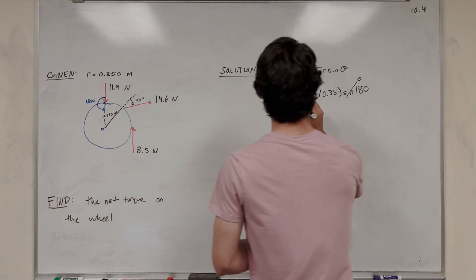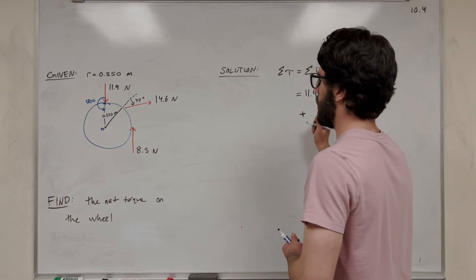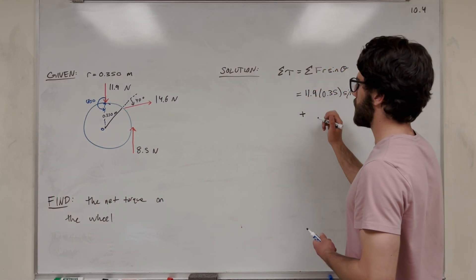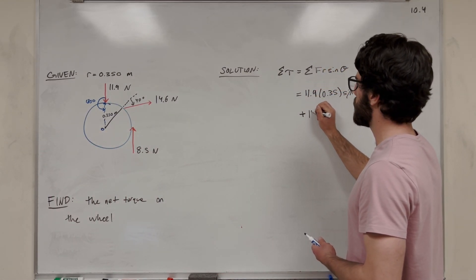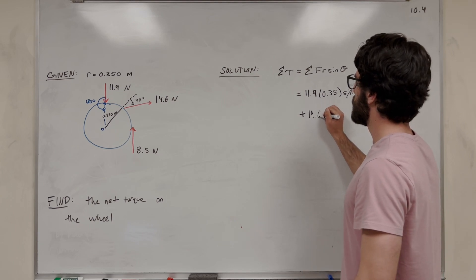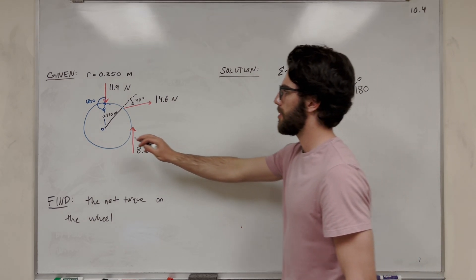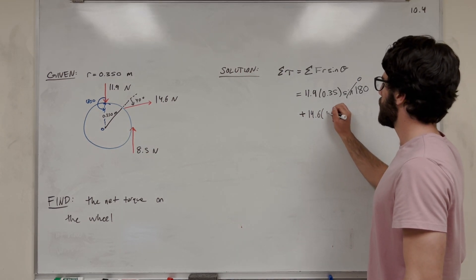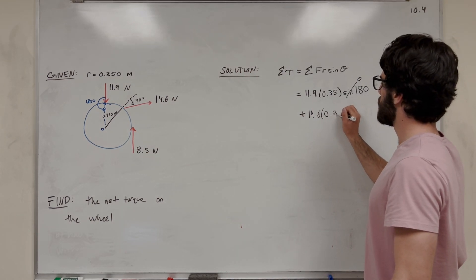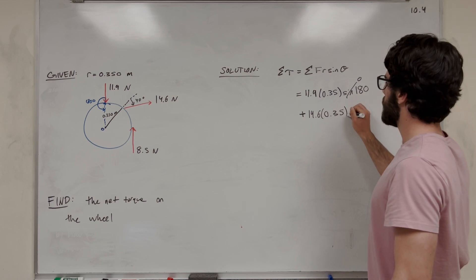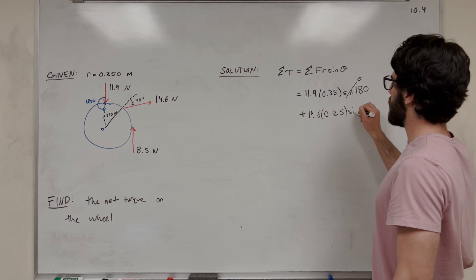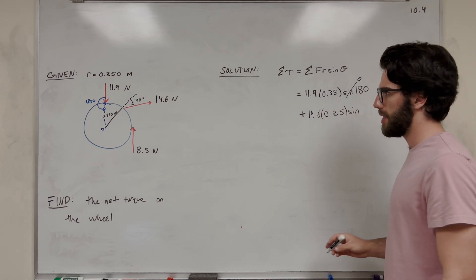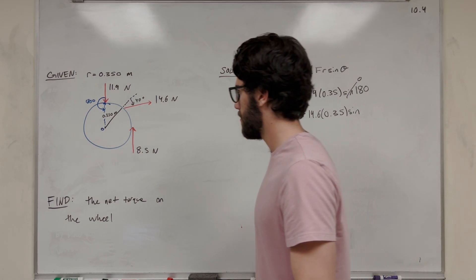So let's do the next force. The force is 14.6 newtons. The radius, again, is the same radius — 0.350 meters. And sine of theta. So now we need to find out what this theta is going to be.